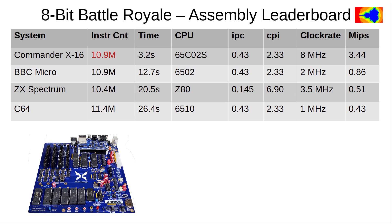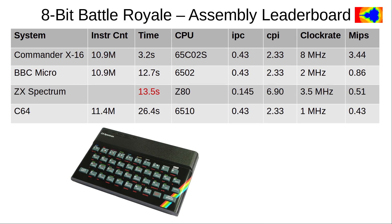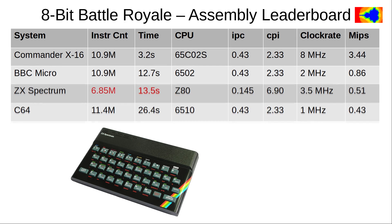Things get interesting with the ZX Spectrum getting a second try. Matt optimizes his code to now make full use of the Z80's many registers. Now the Spectrum crosses the finishing line after only 13.5 seconds. By multiplying with the MIPS value, we see that the new code now only takes 6.85 million instructions to perform the very same benchmark calculations. Indeed, the code has improved quite a bit by making use of the specific advantages the Z80 offers.